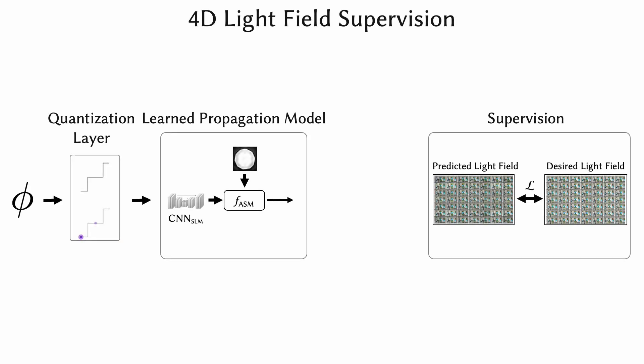We can also predict the outputted light field by applying the short-time Fourier transform to the wavefront at a particular target plane. This can be used to optimize phase patterns to produce a desired light field.